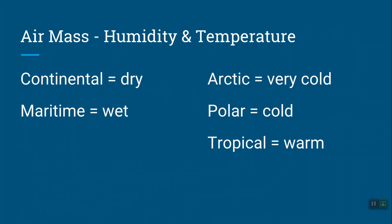So let's take a look at this again. When we think about air masses, air masses are big chunks of air that all have the same temperature and humidity characteristics. They're named based on where they're formed and what their humidity and temperature characteristics are. There are air masses named like continental arctic, continental polar, or continental tropical, for instance.